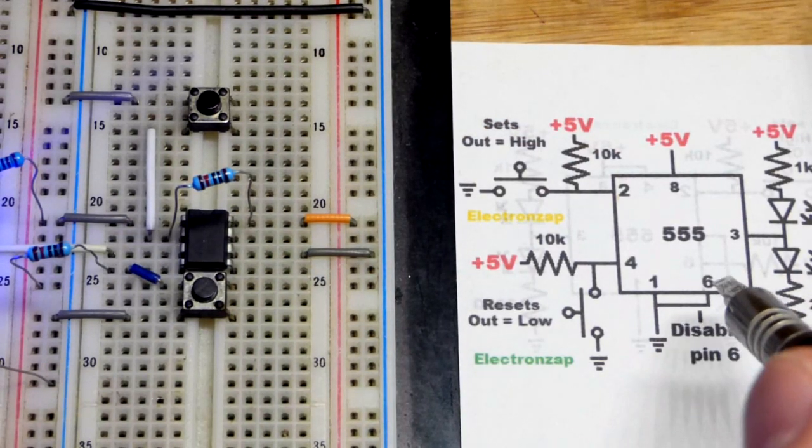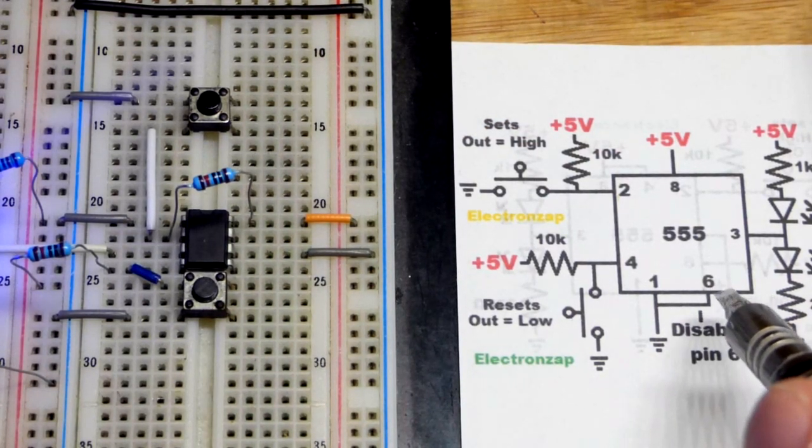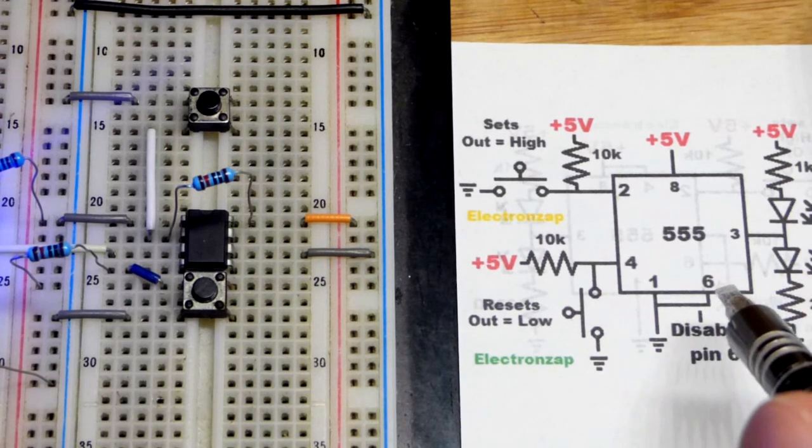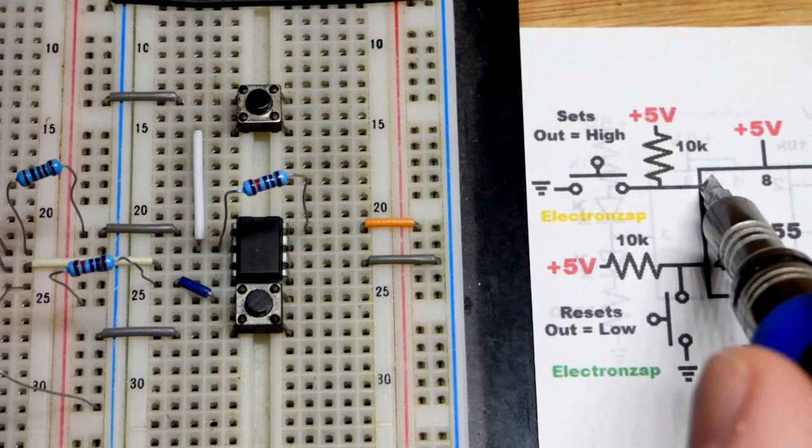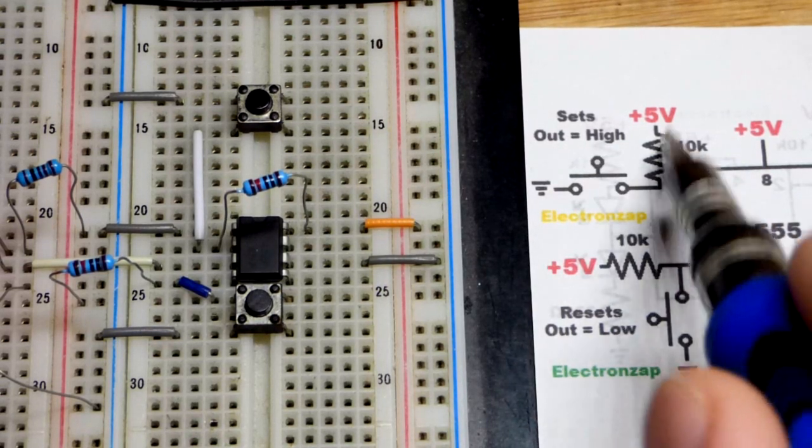You see it also goes to pin 6. Pin 6 is the threshold pin. By connecting it to ground it does nothing. Pin number 2 is the trigger pin. We called it set though for this circuit.